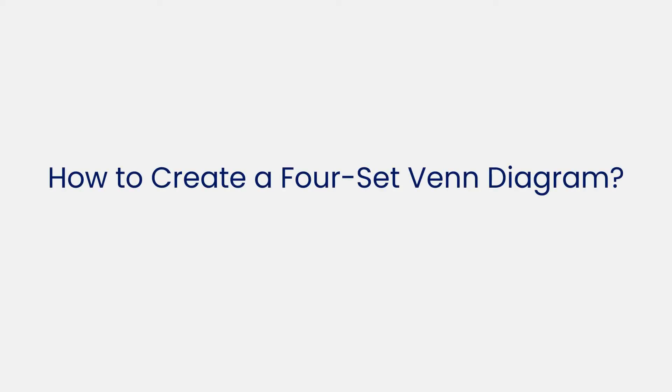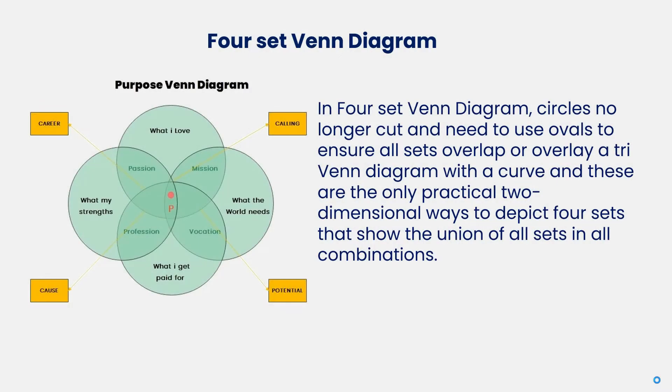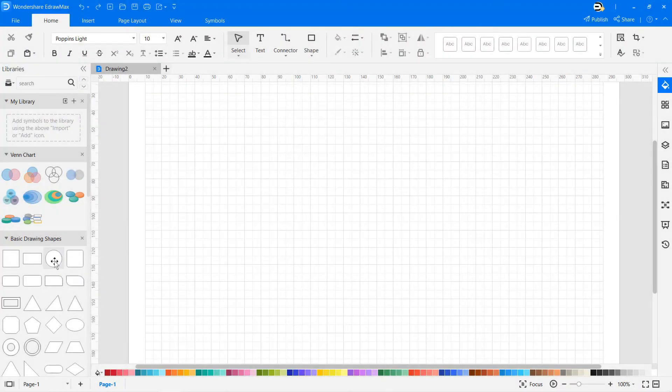Now let's learn how to create a four-set Venn diagram. In the four-set Venn diagram, circles are no longer sufficient, and you need to use ovals to ensure all sets overlap. Or overlay a tri-Venn diagram with a curve, as these are the only practical two-dimensional ways to depict four sets that show the union of all sets in all combinations. Draw your four-set Venn diagram to meet your needs.